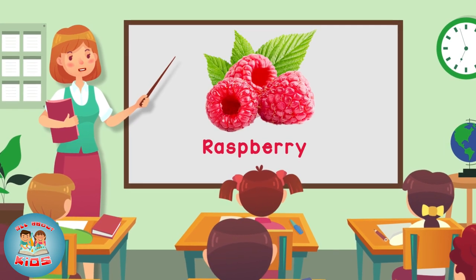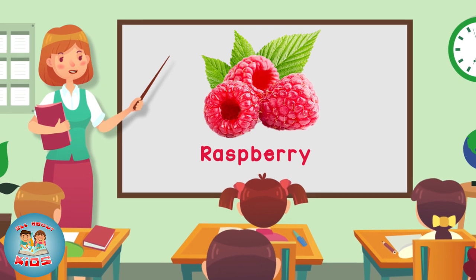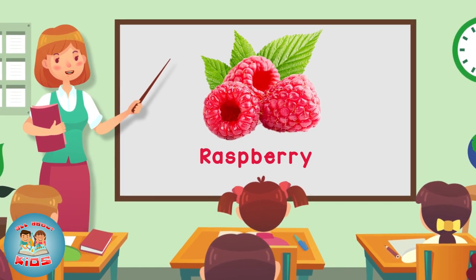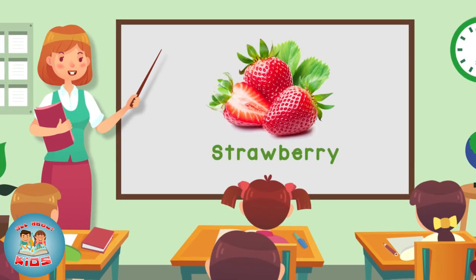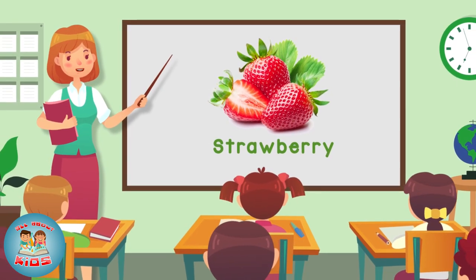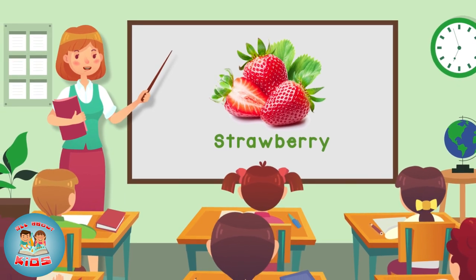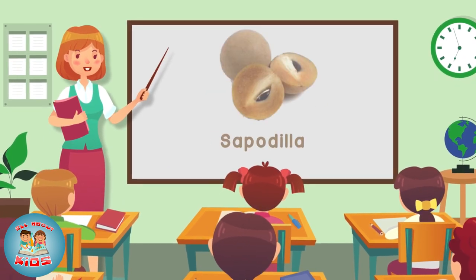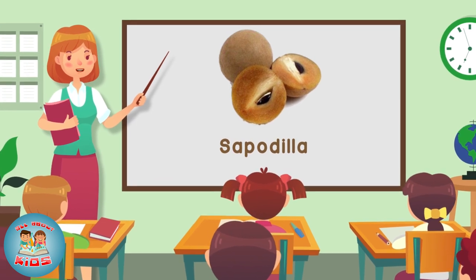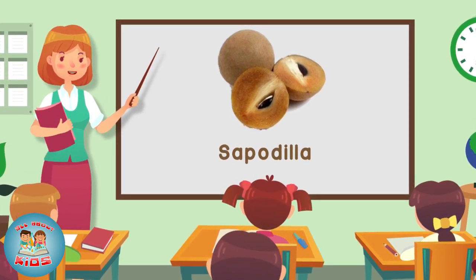Raspberry — this is a raspberry. Strawberry — this is a strawberry. Sabudula — this is a sabudula.